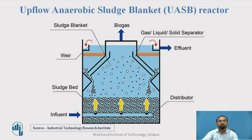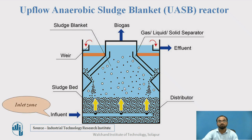Let us study how the UASB mechanism works. You can see the diagram where the influent enters through a lot of ports into this treatment facility. It is fully enclosed. As it is anaerobic in nature, no oxygen is allowed to pass inside the reactor. With the help of distributors, the wastewater coming inside the UASB reactor is spread out across the surface area. As the water passes inside, this area is known as the inlet zone — this is the first zone.